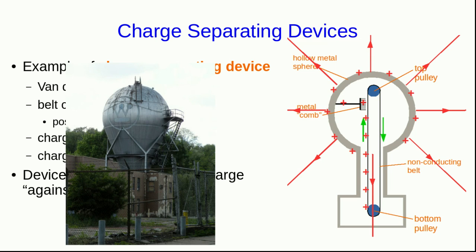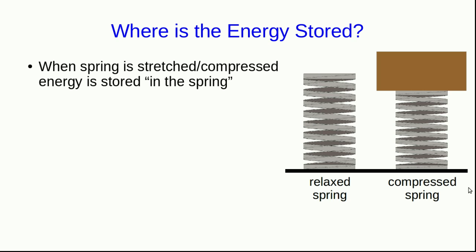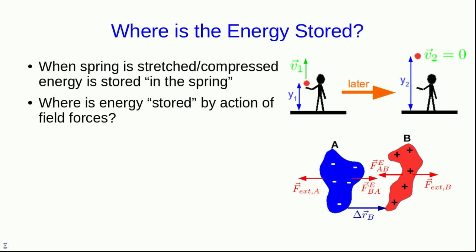A question that's worth thinking about is where the energy is stored when a system has electric potential energy. Thinking back to springs, it's sort of obvious that when we stretch or compress a spring, then energy is stored in the spring. However, where is energy stored by the action of field forces like the gravitational force when you throw a ball up in the air? Or the electrical forces when we pull two oppositely charged objects apart?